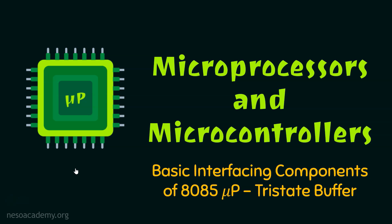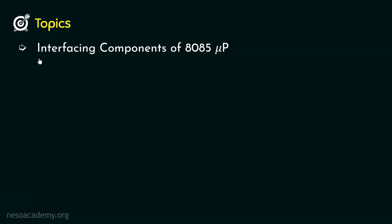Hello everyone and welcome back. From the previous session itself we have been learning about the basic interfacing components of the 8085 microprocessor. In that session we learned about the latch. In this session we are going to learn about the tri-state buffer, so without any further ado let's get to learning. Today from all the four different interfacing components of 8085 microprocessor, we are going to learn about the second one — the tri-state buffer.